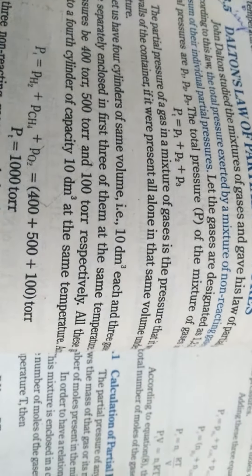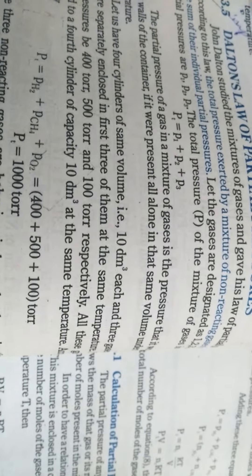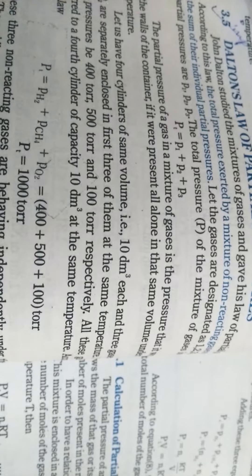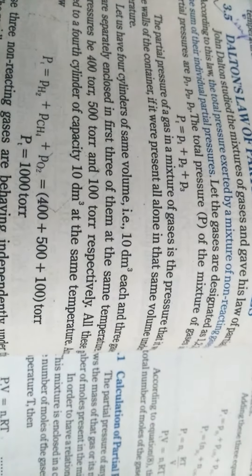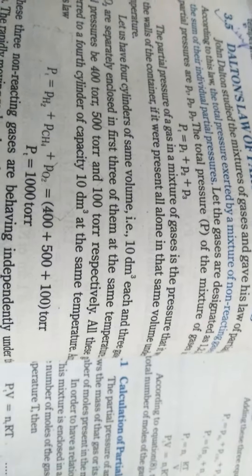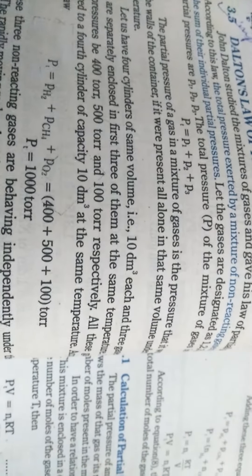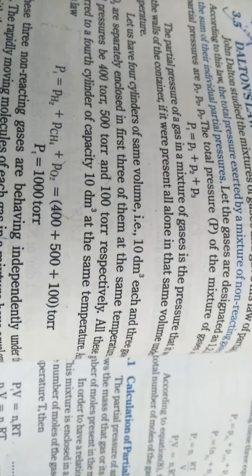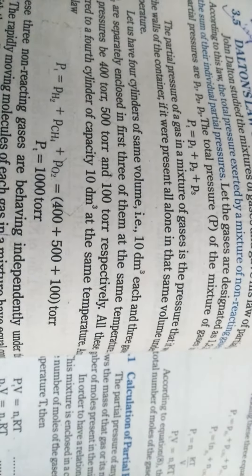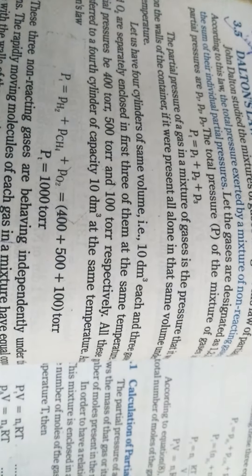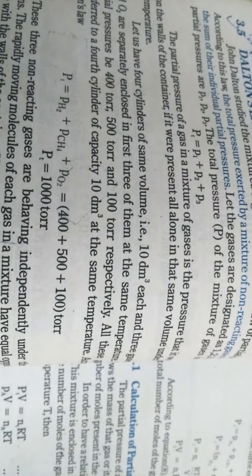John Dalton studied the mixture of gases and gave his law of partial pressure. The statement of this law is: the total pressure exerted by a mixture of non-reacting gases is equals to the sum of their individual partial pressures. For example, agar total partial pressure PT hai, toh that is equals to P1 plus P2 plus P3 where P1, P2 and P3 are the partial pressures, individual partial pressures of all the gases.